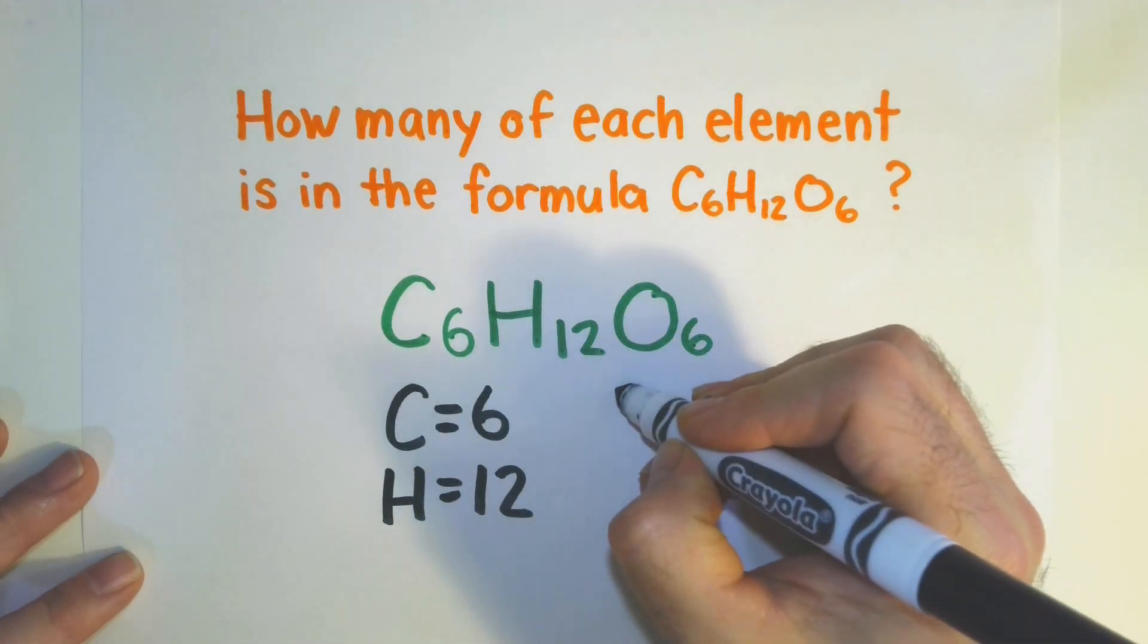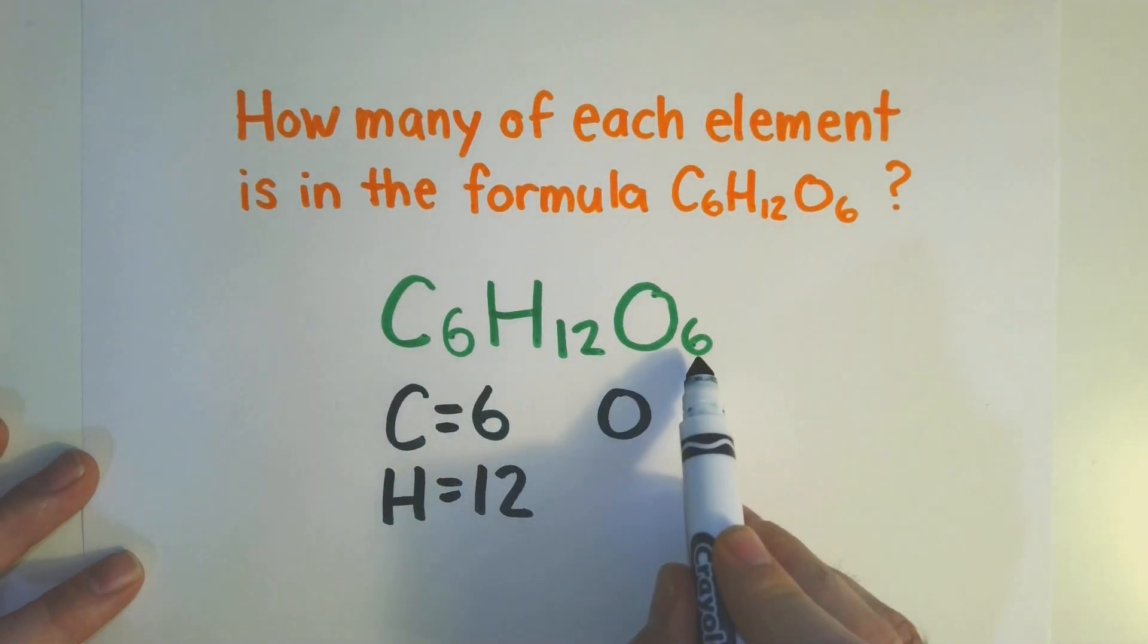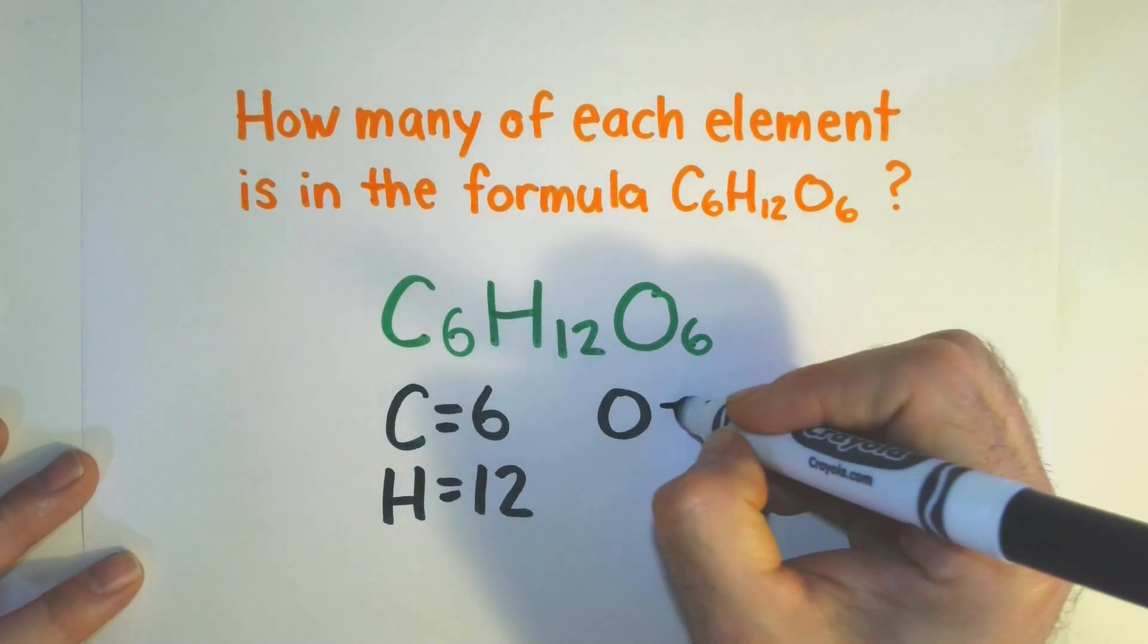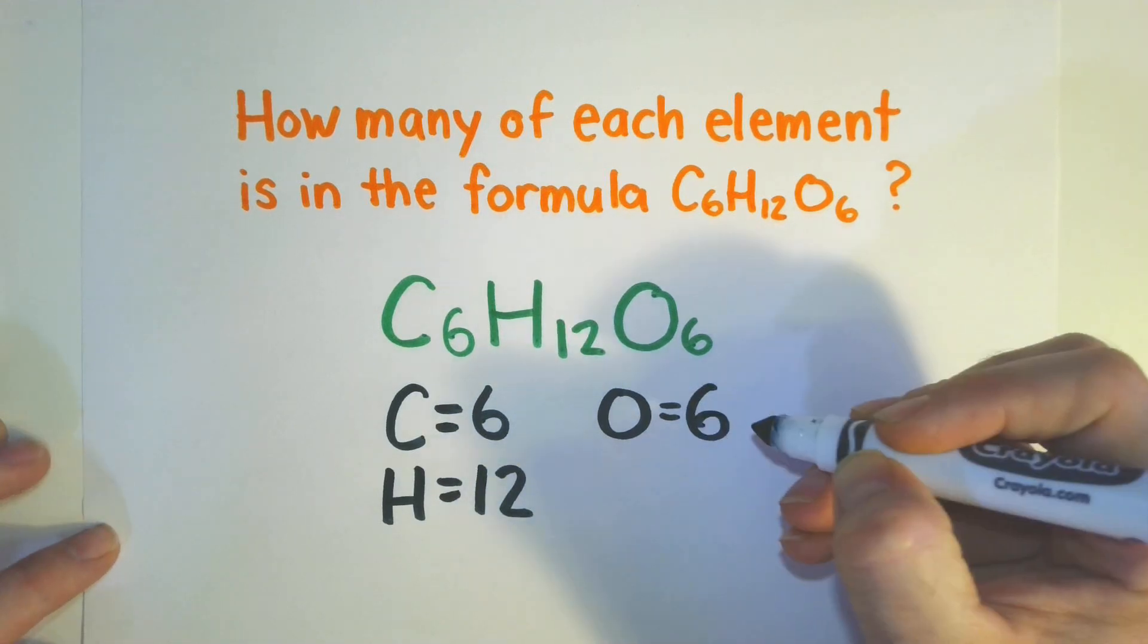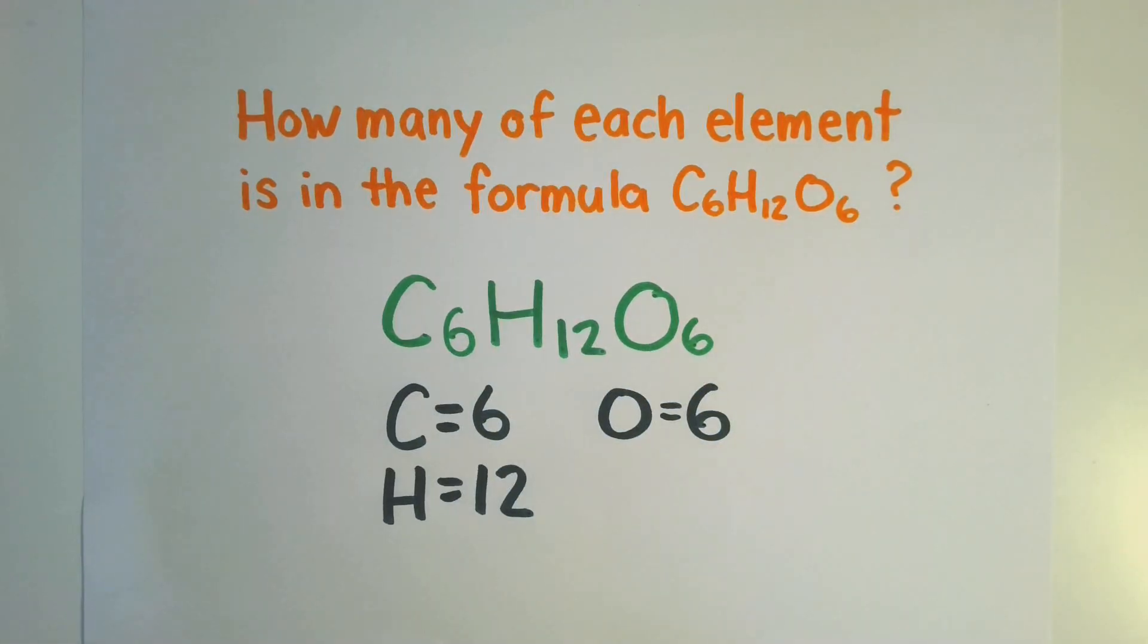And finally, for oxygen, we have a subscript of 6. And that tells us there are 6 oxygen atoms per glucose molecule.